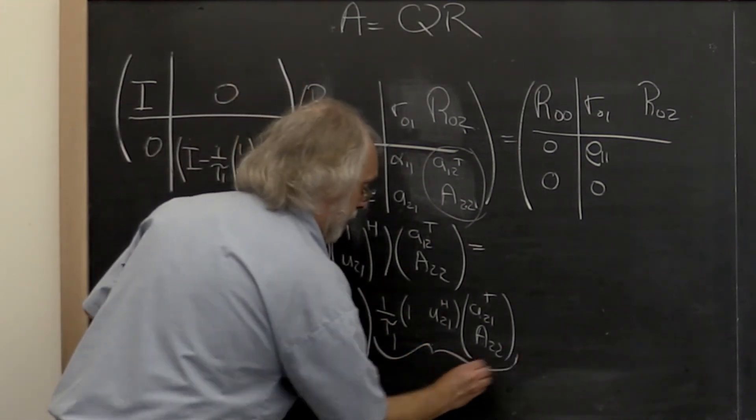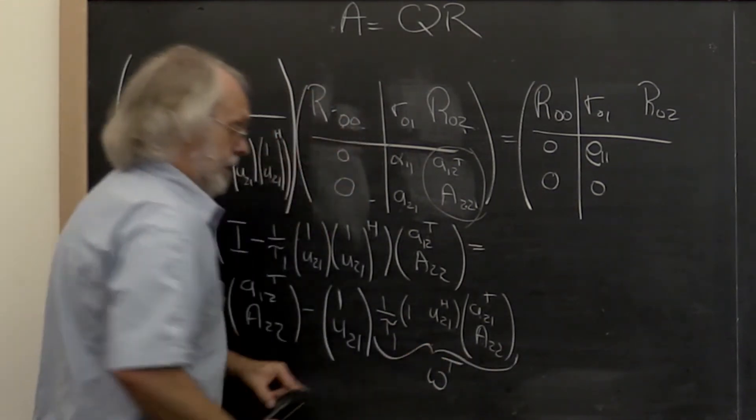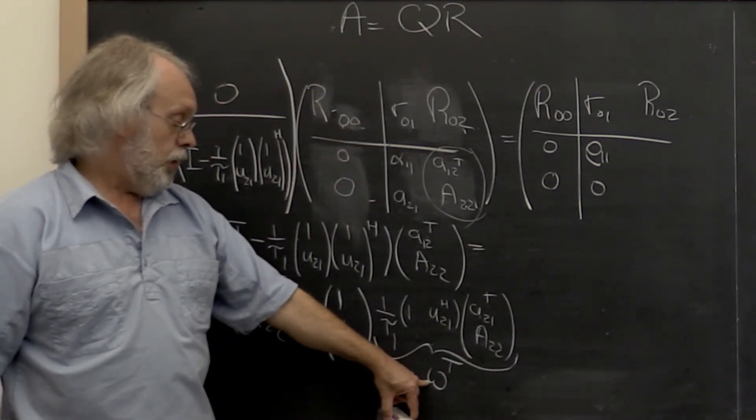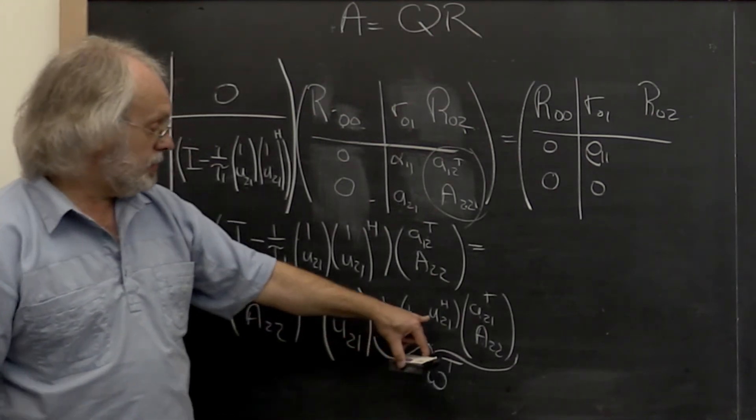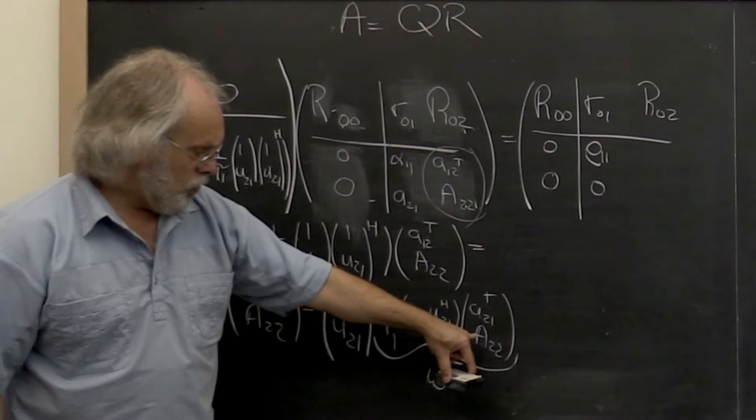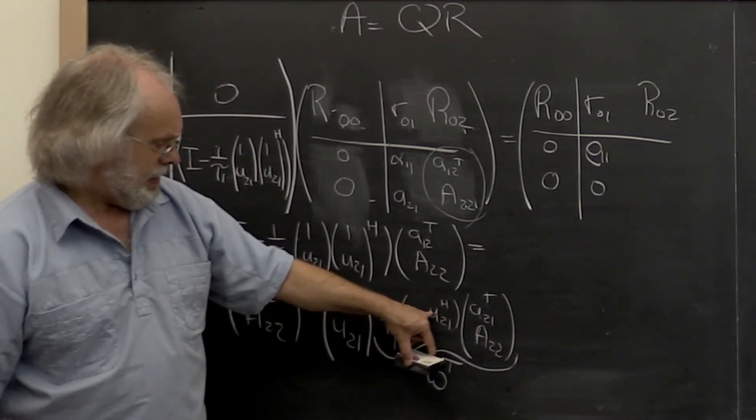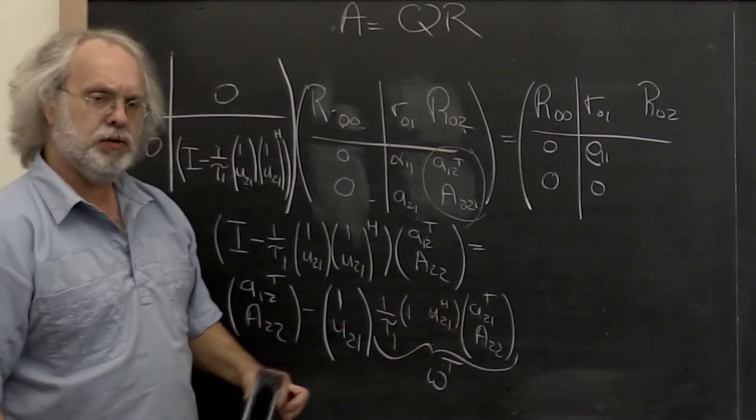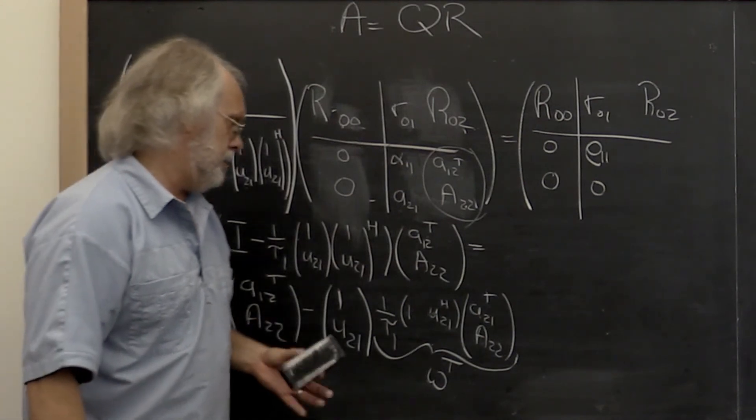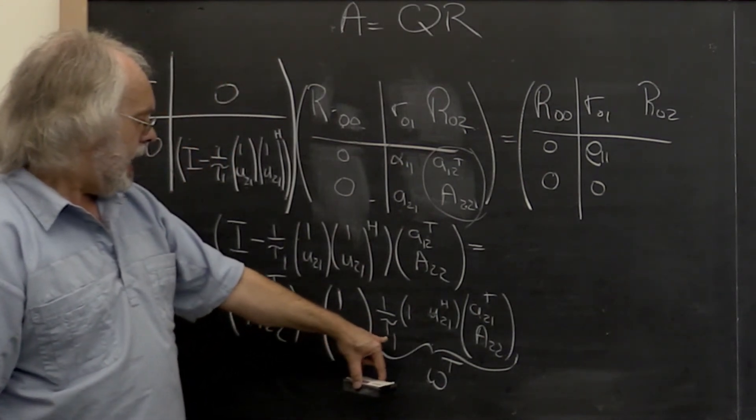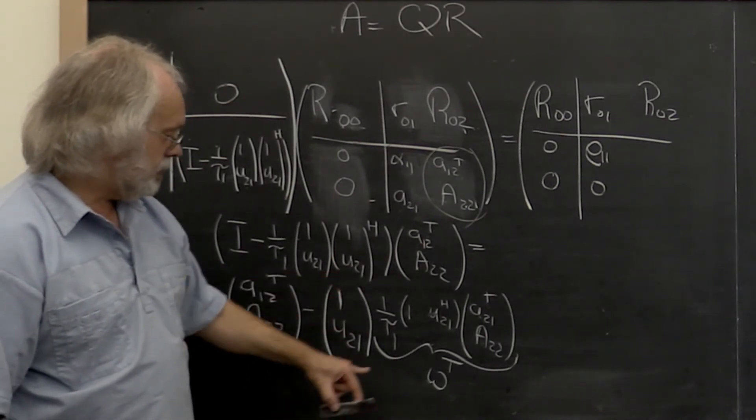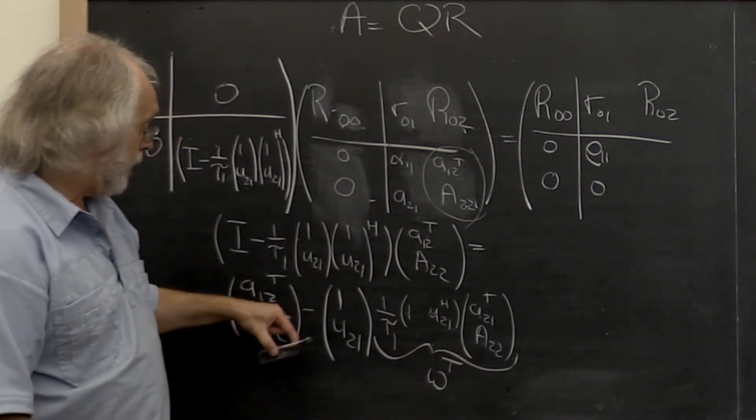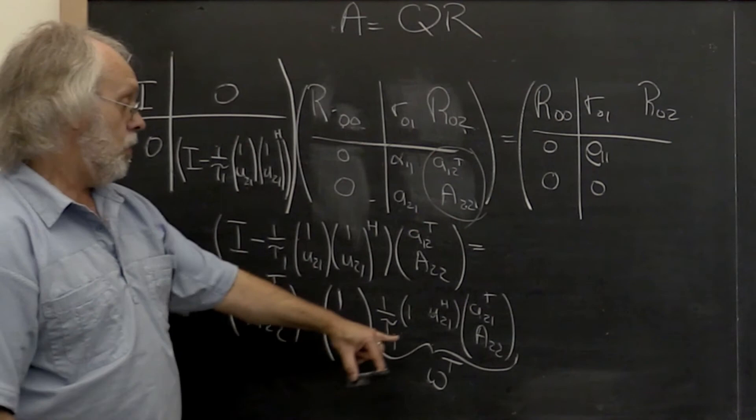This right here we can call row vector w transpose. And notice that it is computed by mostly a row times a matrix multiply, which of course is just like a matrix times vector multiply. And then a column vector times a row vector. That's an outer product. So this is really a rank-1 update.